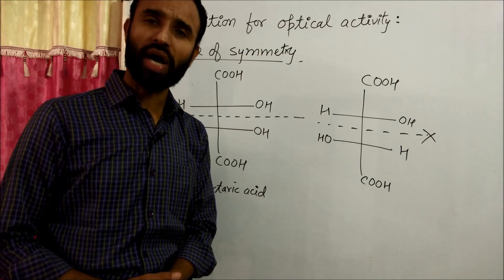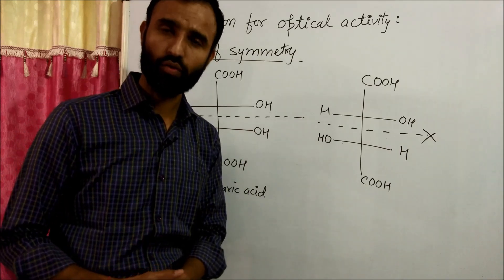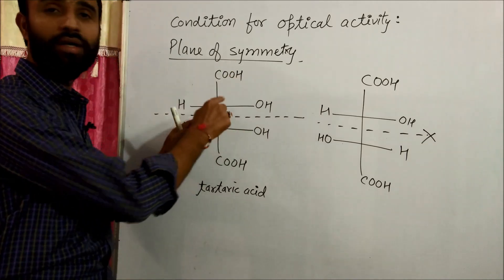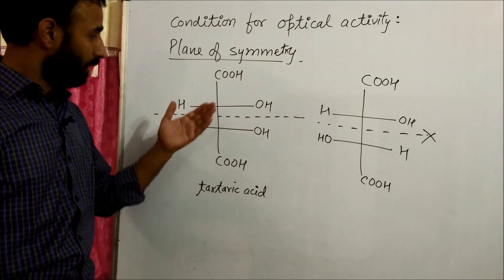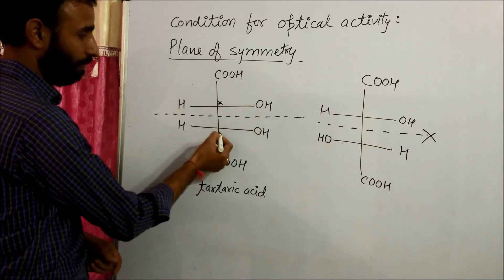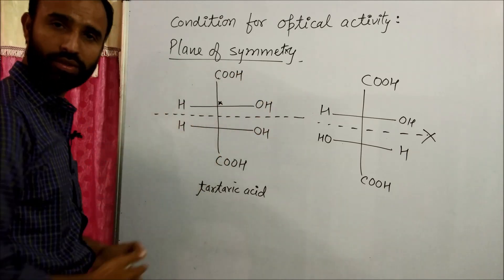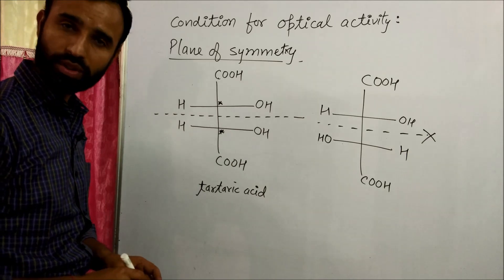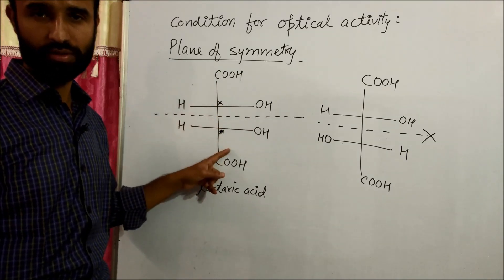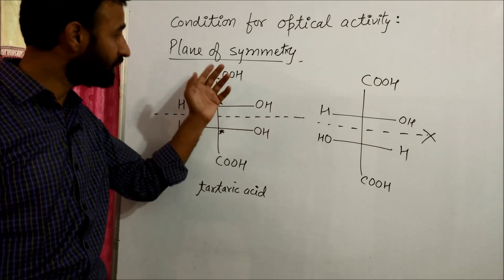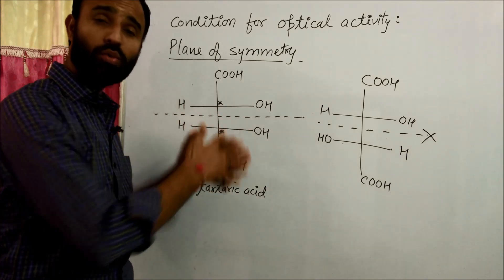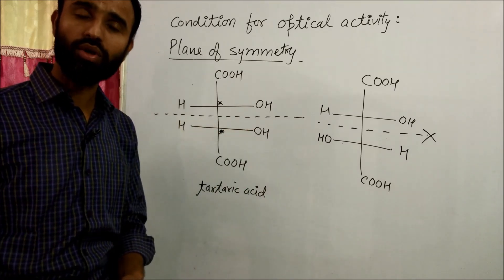Normally, people start looking at the chiral center. What is a chiral center? A chiral center or chiral carbon is the carbon which is attached to four different atoms or groups. In the case of tartaric acid, this carbon is attached to four different atoms or groups, and this carbon is also attached to four different atoms or groups — so this molecule has two chiral carbons. But as it has a plane of symmetry, it is optically inactive. So the presence of a chiral carbon doesn't necessarily mean the molecule is optically active.